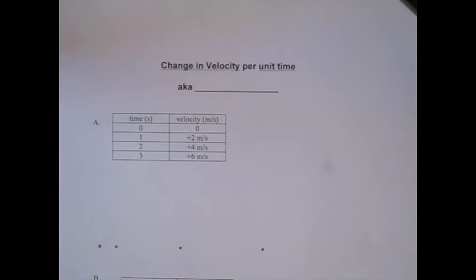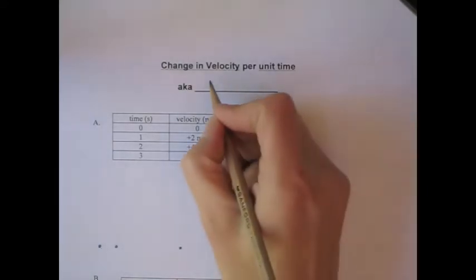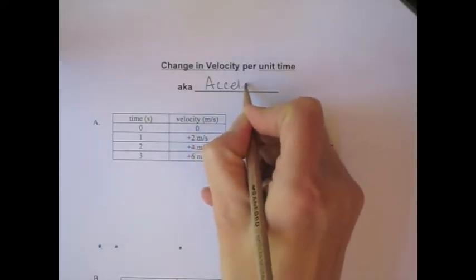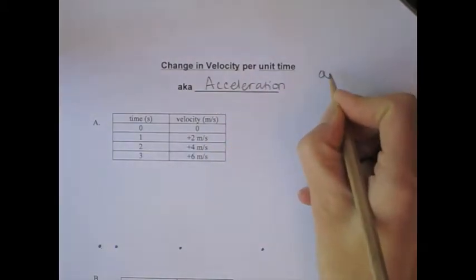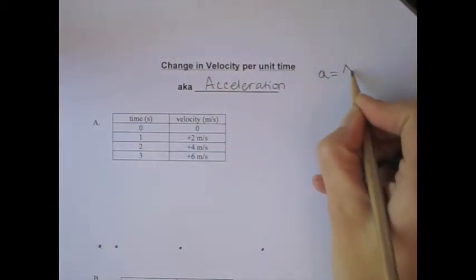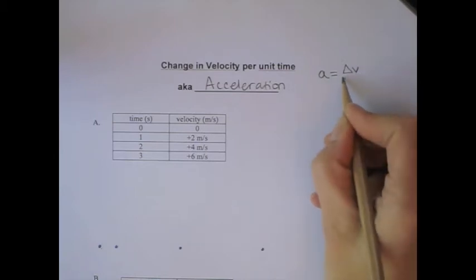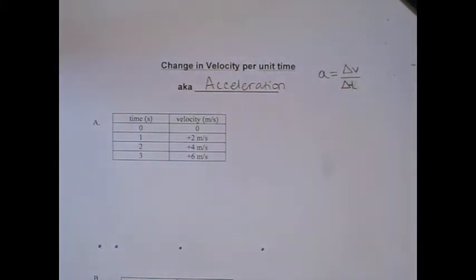Change in velocity per unit time, otherwise known as acceleration. The definition of acceleration is change in velocity per unit time. We're going to look at the motion of four different objects, each with a different characteristic — these are the main four possibilities when looking at changing velocities for motion along a straight line.